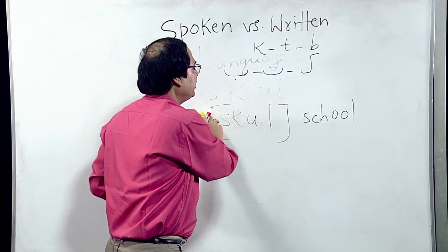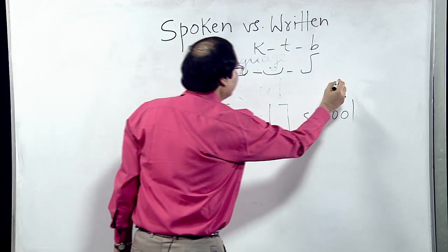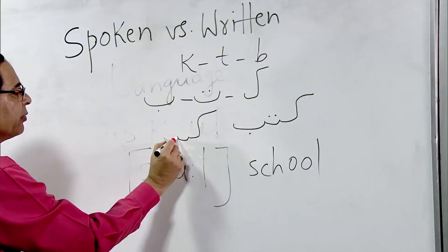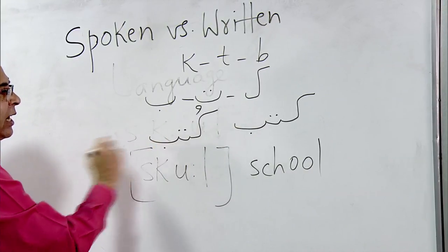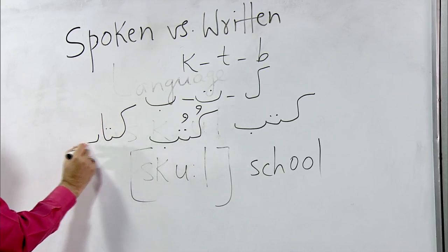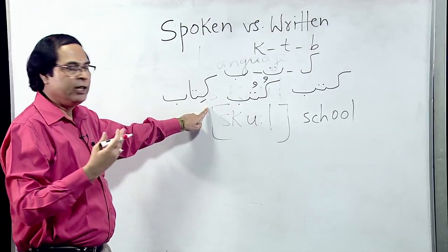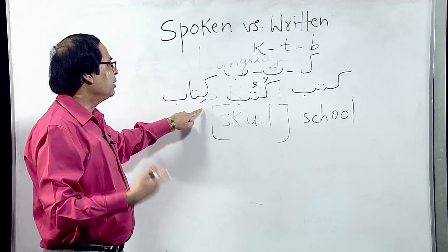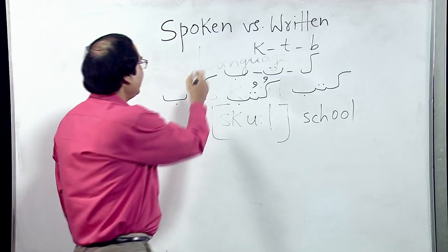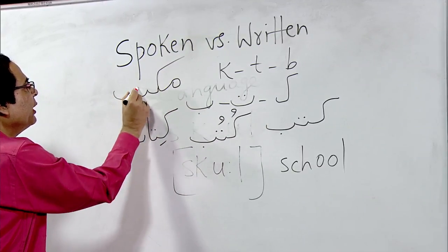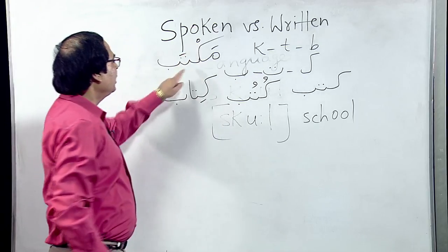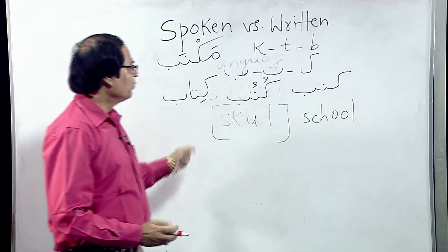This is true for Urdu, which uses the Perso-Arabic script. With consonants k, t, b, you can create words — 'kutub' (plural of 'book') and 'maktub' (office), for example — but the vowel symbols are not written. Vowel signs are used only in children's literature or when people are learning the Arabic script. So 'kutub' is books and 'maktub' is office, but the vowels are omitted in standard writing.